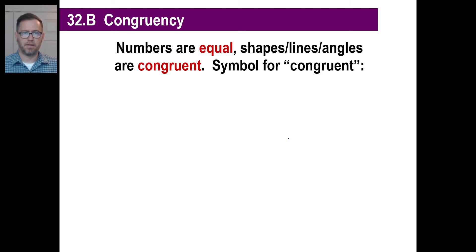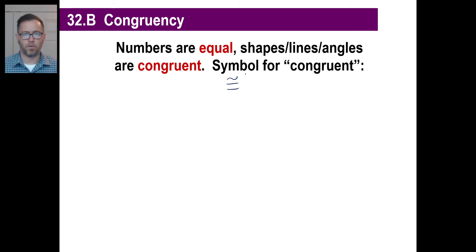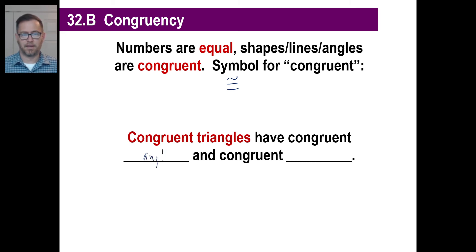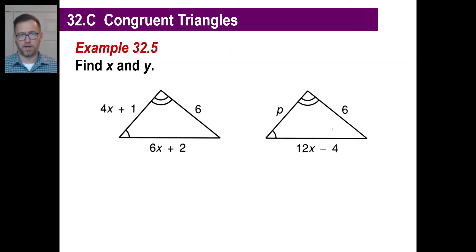Let's look very quickly at something called congruency. This is just a fancy way of saying something's geometrically equal. Numbers are equal. Shapes, lines, and angles are congruent. The symbol for congruent is this — you should be familiar with that. The famous saying for the triangles is: congruent triangles have congruent angles and congruent sides. The little abbreviation: congruent parts of congruent triangles are congruent. There are two congruent triangles. We can tell because we have two angles — this is the same as that angle, this is the same as that angle. AA means AAA, so that tells us that the third angles are both exactly the same.